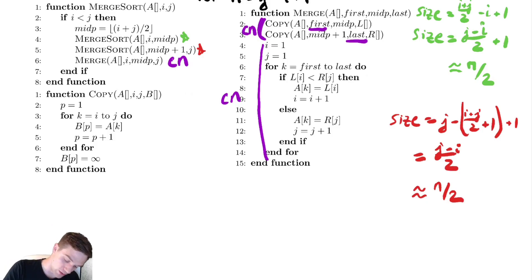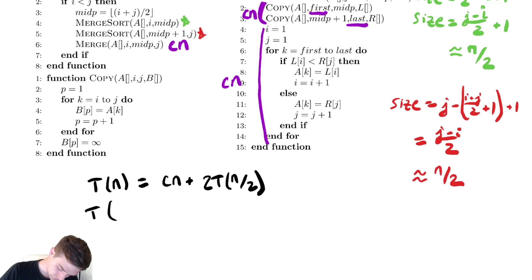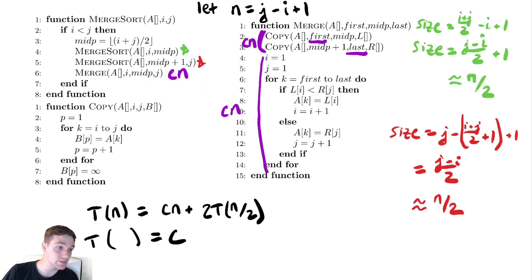So what is our recurrence relation? Our recurrence relation will be T(n) is equal to cn plus my green recursive call was of size n over two. My red recursive call was of size n over two. So I have two recursive calls of size n over two. And now we need our base case. Let's figure out what that is. It's going to take constant time. But looking at our merge sort algorithm, we have that as long as i is less than j, we are going to sort. So if i is equal to j, that means we are sorting an array of size one. So our base case is an array of size one.